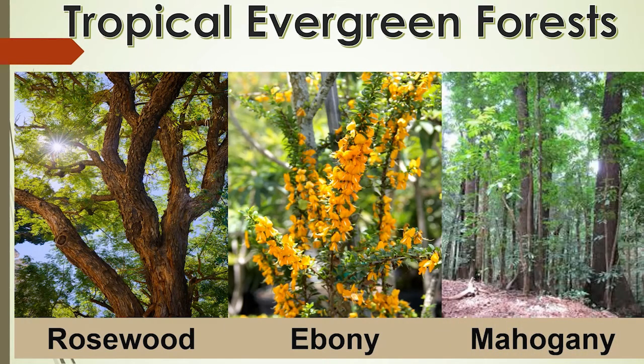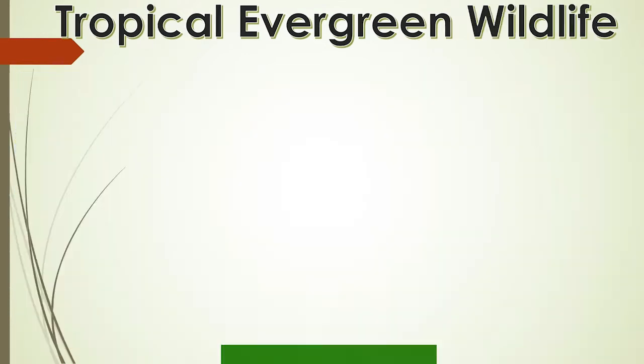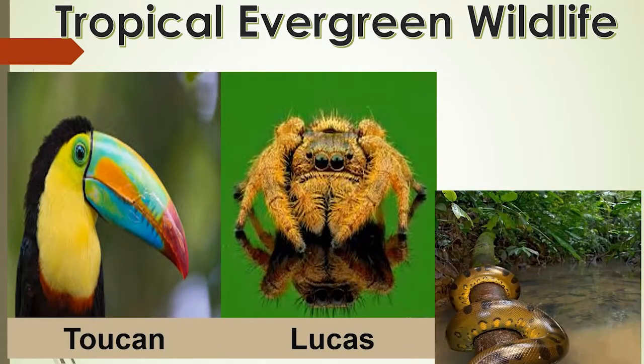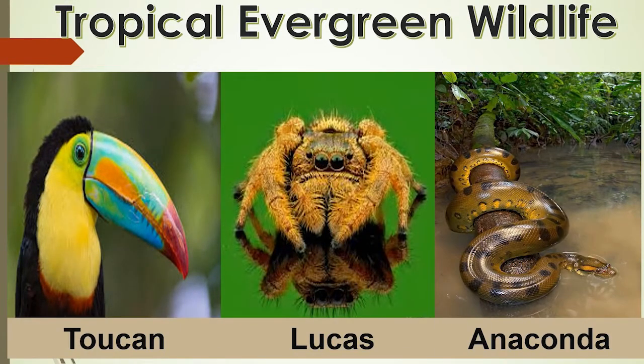Hardwood trees like rosewood, ebony and mahogany are common here. Different types of insects, birds and reptiles are found here. The anaconda, one of the world's largest snakes, is found in the tropical rainforest.